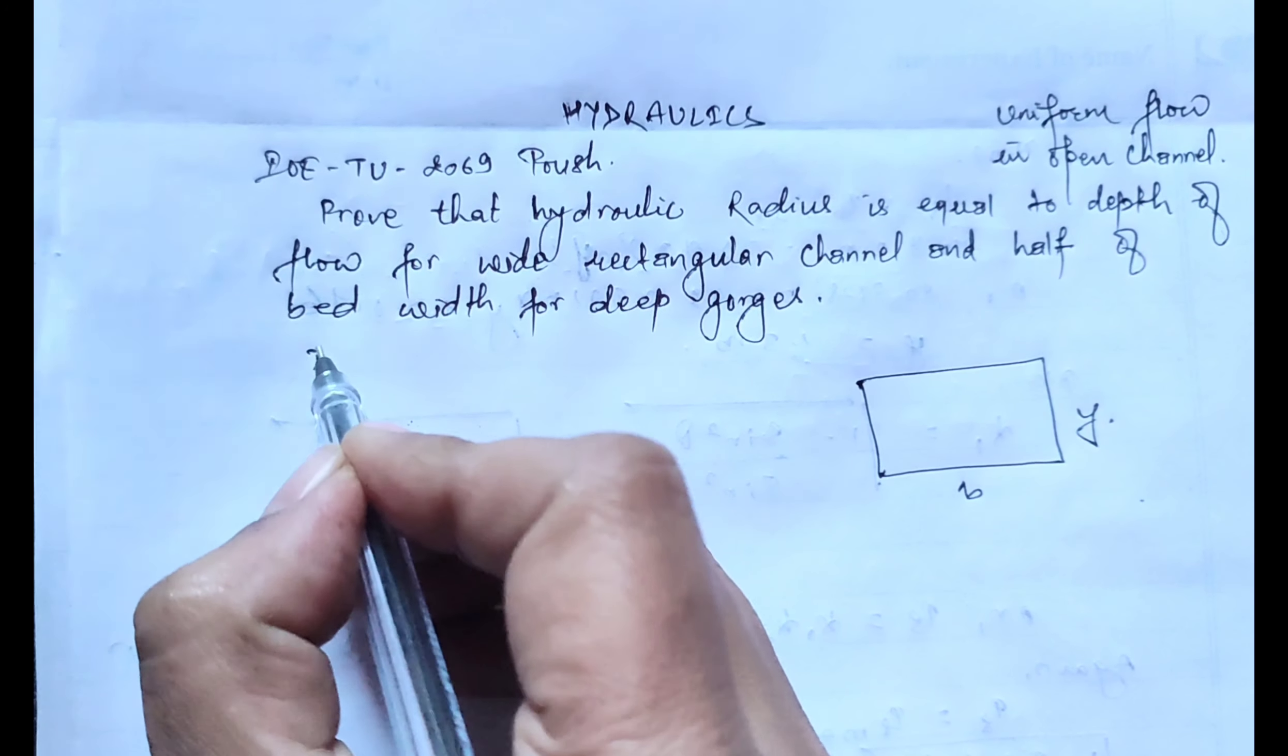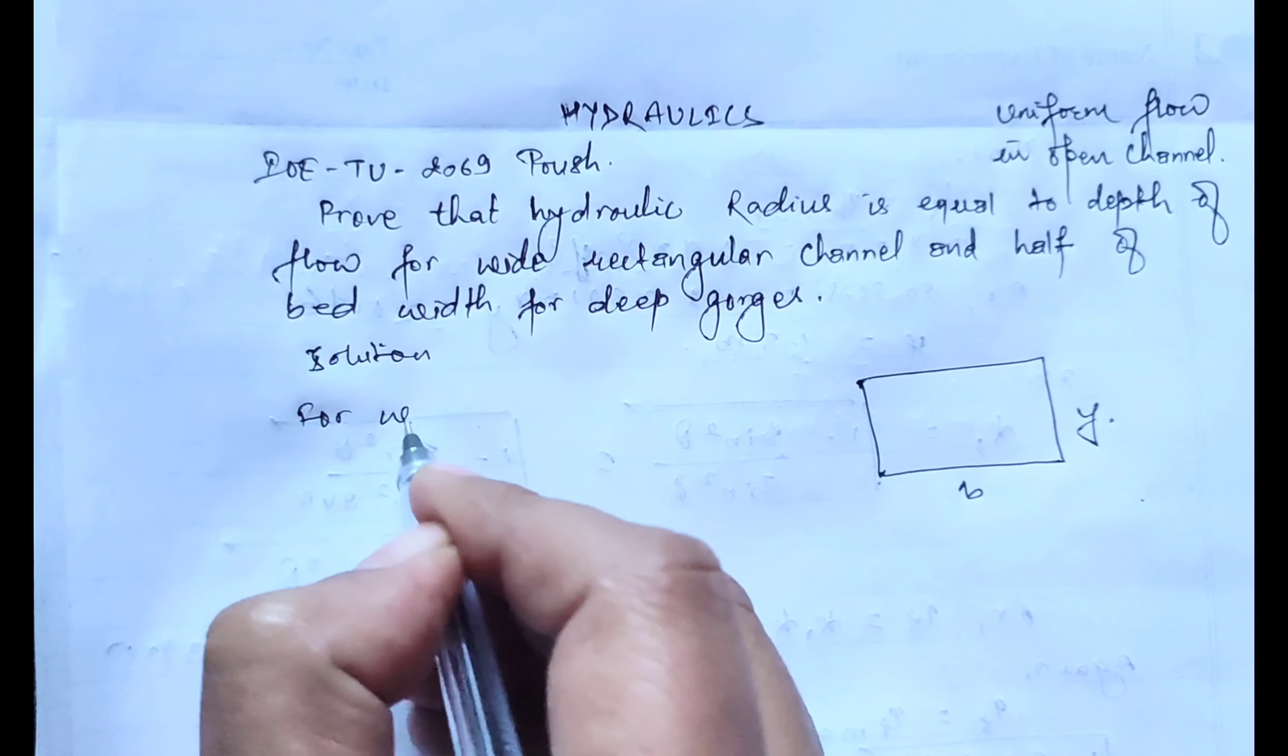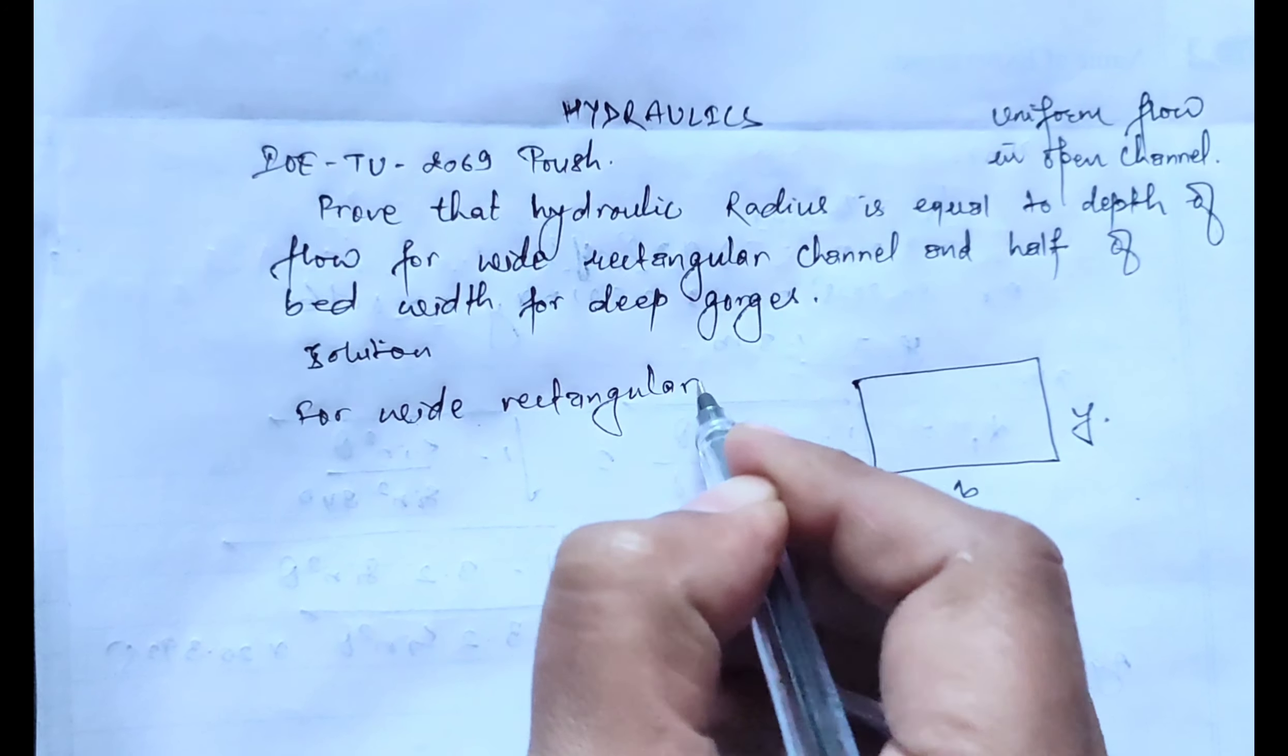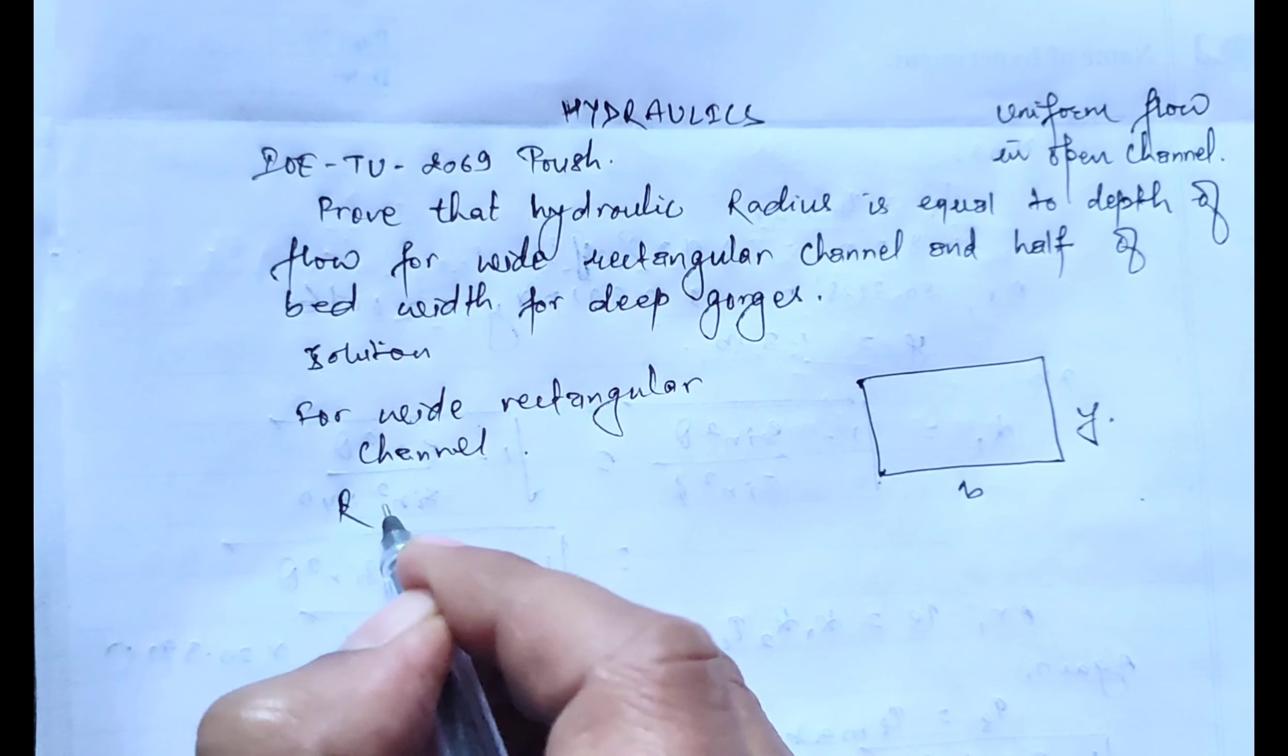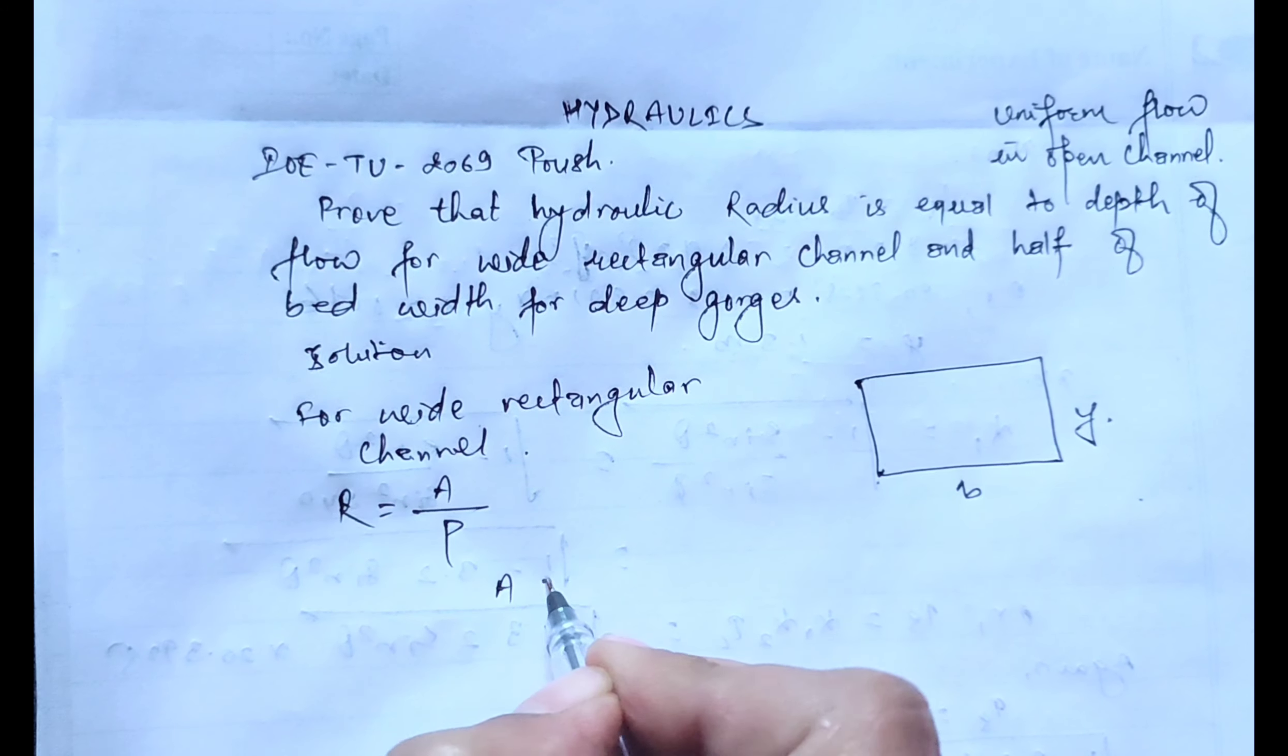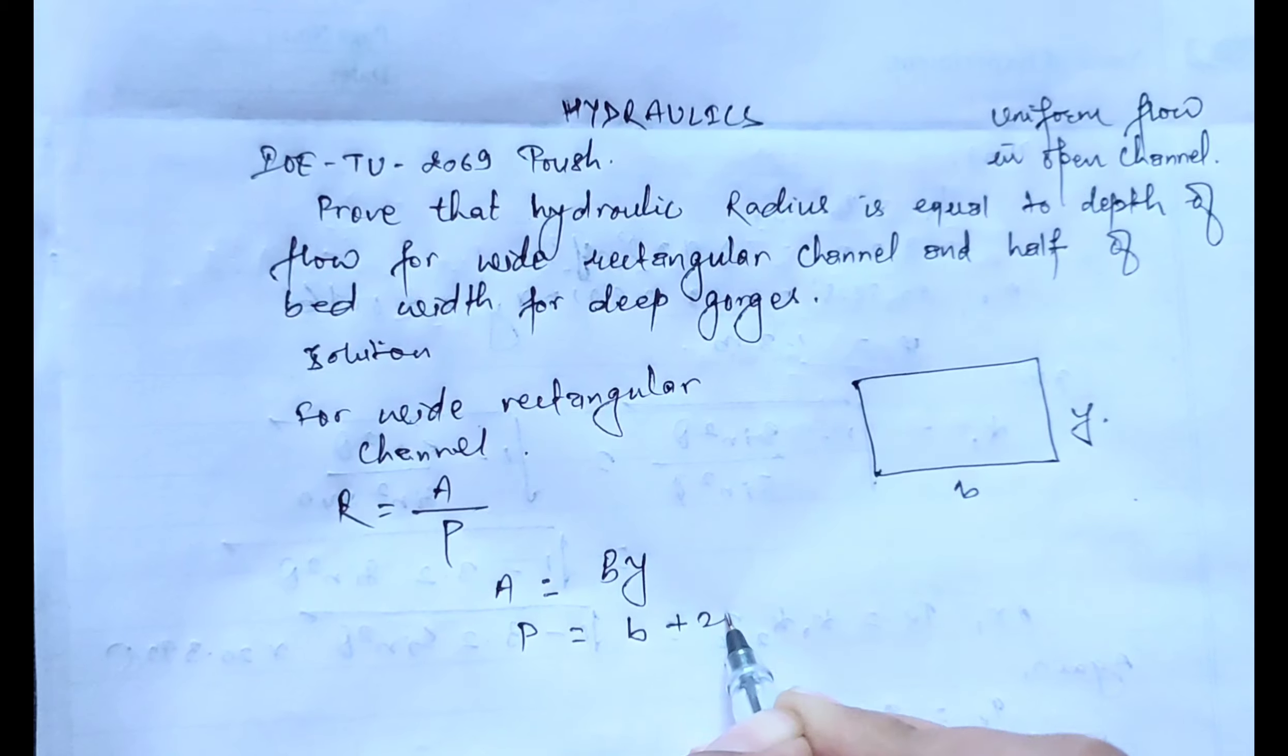Now let's start with the solution. For rectangular channel we have hydraulic radius R equals area by perimeter, where the area of rectangular channel A is given by BY and the perimeter P is given by B plus 2Y.